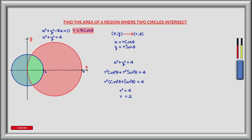For the blue circle, substituting for x and y gives r squared cos squared theta plus r squared sine squared theta equals four. Taking out the common factor of r squared and using the trig identity cos squared theta plus sine squared theta equals one, we get r squared equals four. Taking the positive square root of both sides gives r equals two.